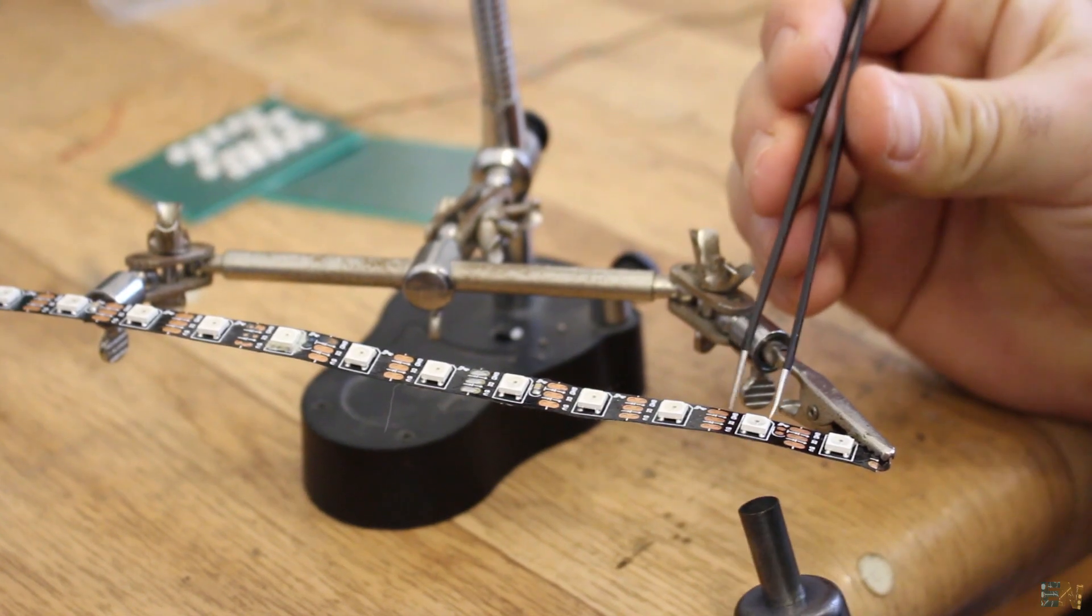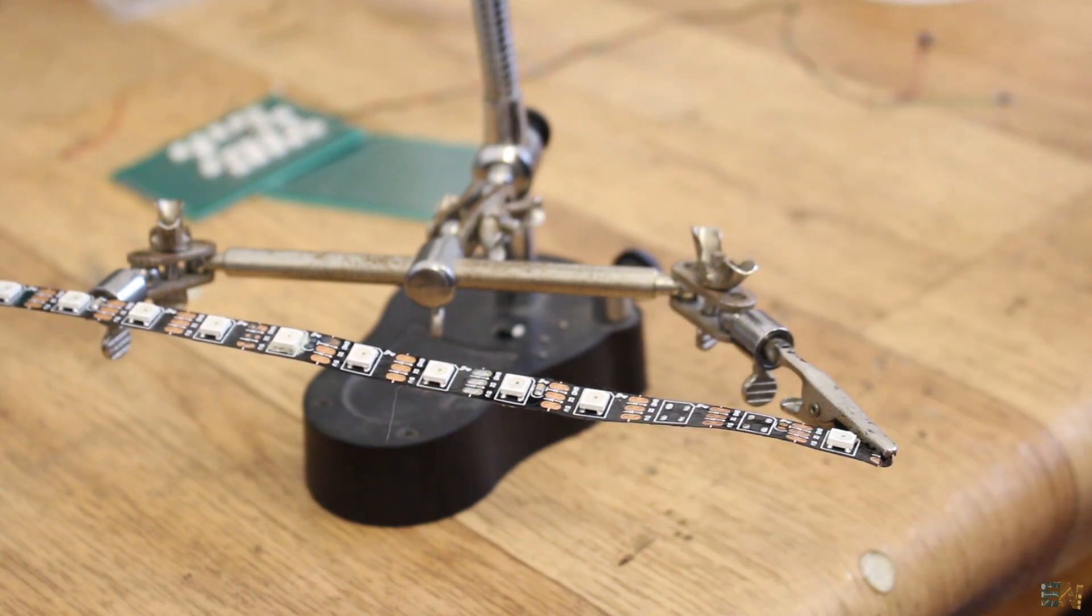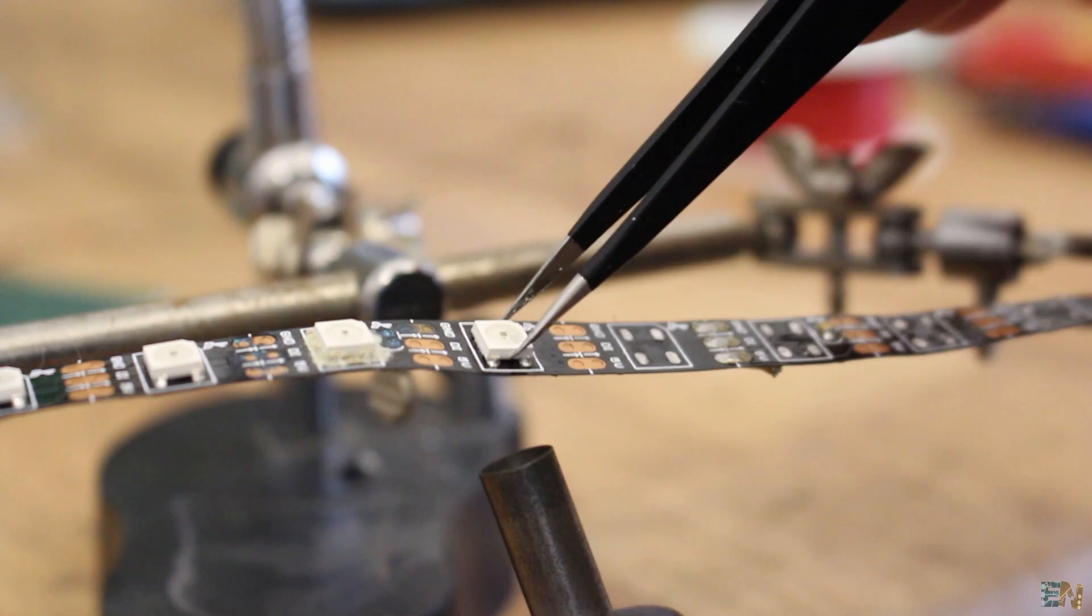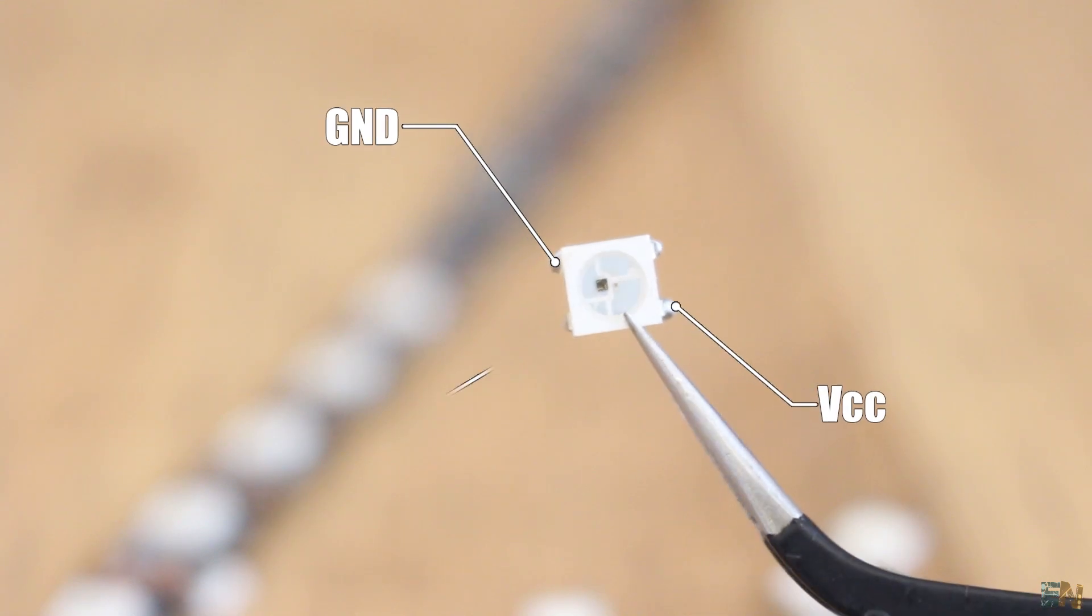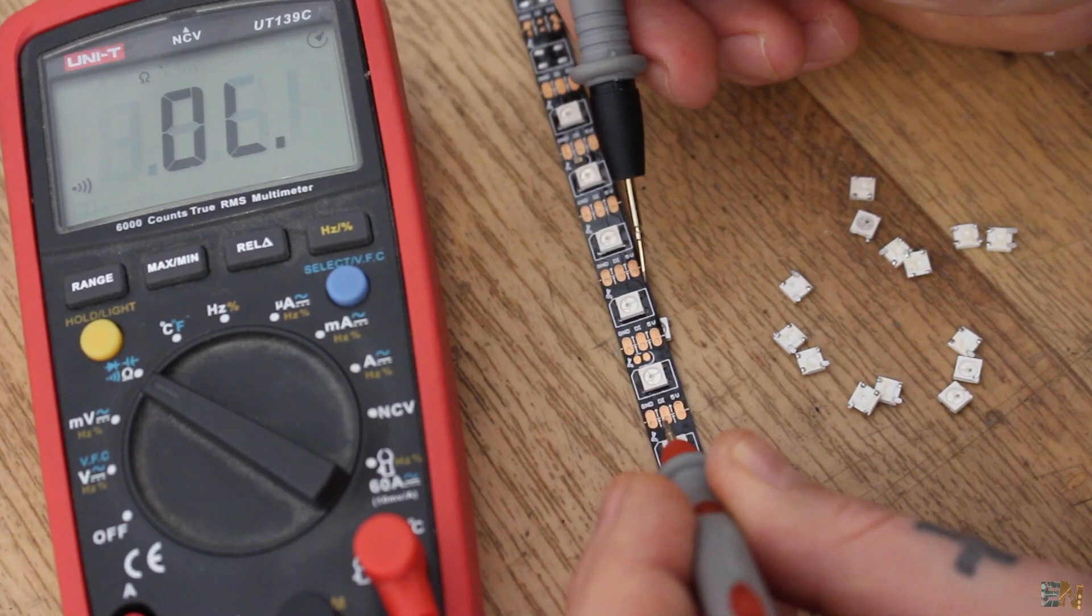I first removed some LEDs from the LED strip. Getting the LEDs out is very easy with a hot air gun and if you don't have one, just buy directly the LEDs. We know that each LED has 4 pins and those are for ground, 5V, data in and data out.